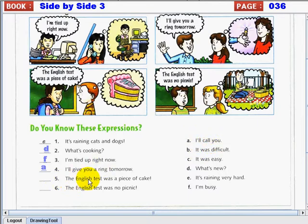Number 5. The English test was a piece of cake. The English test was a piece of cake. What's the answer? Very good. It's letter C. It was easy.